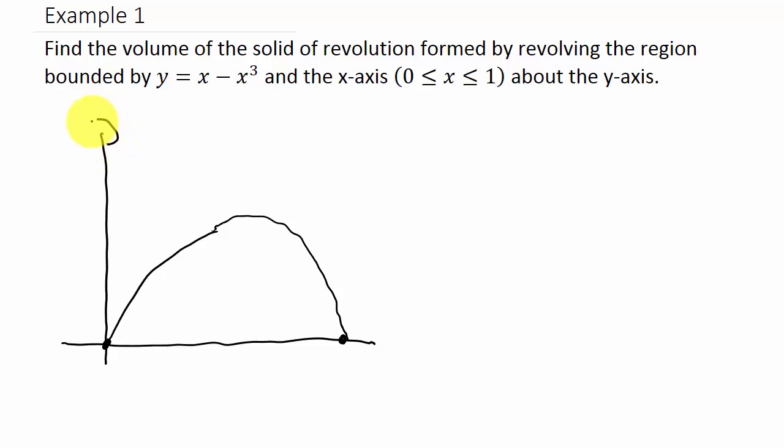We're going to revolve it about the y-axis. Now when you're doing the shell method, when you draw your rectangle, you want to draw your rectangle parallel to the axis that you're revolving it around. So our rectangle is going to look like this. This is a little bit different.